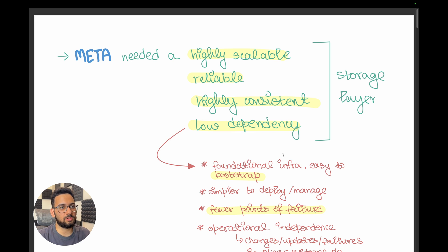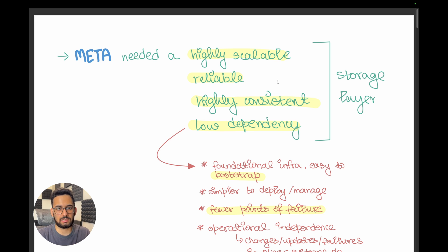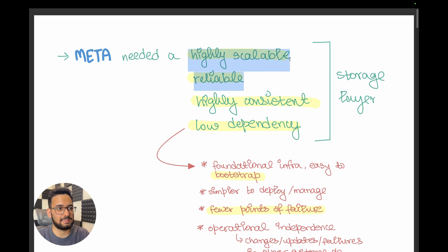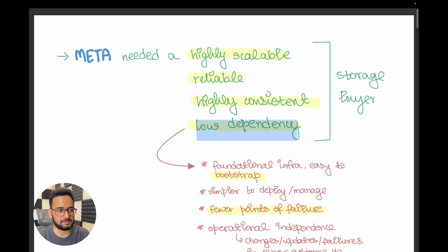Meta wanted to design a storage solution for its build and distribution storage layer. Whenever you build something or have a release, the storage layer that supports all of that is part of your mission-critical infrastructure. So naturally, it had to be highly scalable, reliable, highly consistent, and also low dependency.